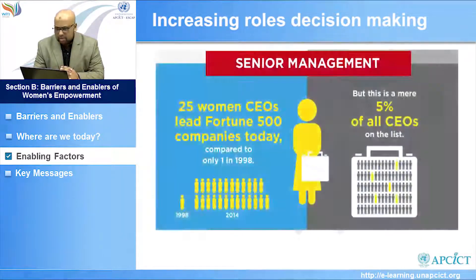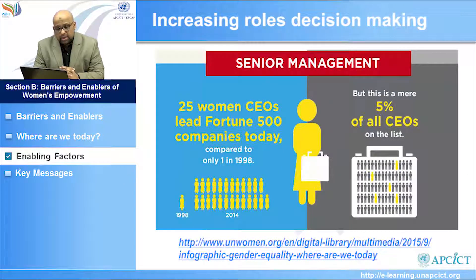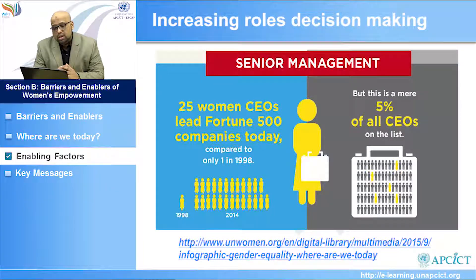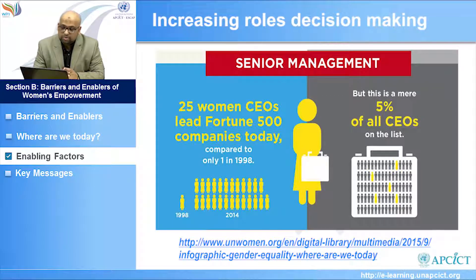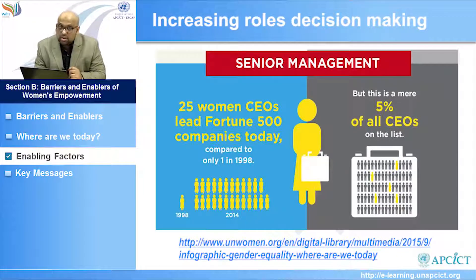Another important issue is increasing the roles of women in decision-making and senior management. Currently, 25 women CEOs lead Fortune 500 companies — in 1998, it was just one. But only 5% of all CEOs on the Fortune 500 list are women, so there is a long way to go before achieving gender parity in corporate decision-making. The same principle applies for smaller companies globally and locally.